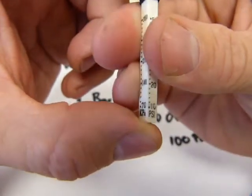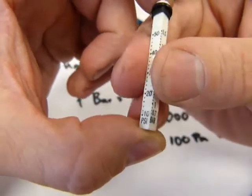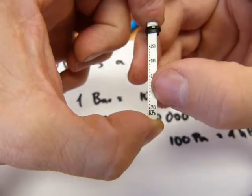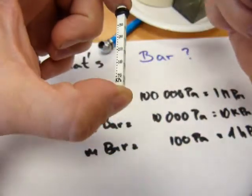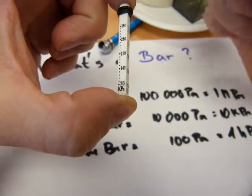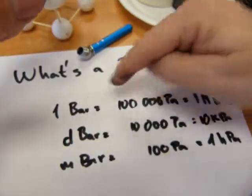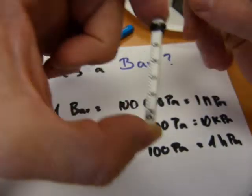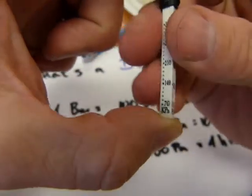There is one bar on that side and if I rotate it around, one bar there roughly equals 100 kilopascals on this side. So you can see one bar is one megapascal or 100 kilopascals.